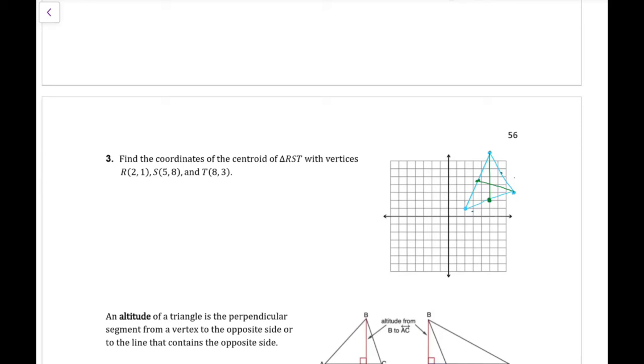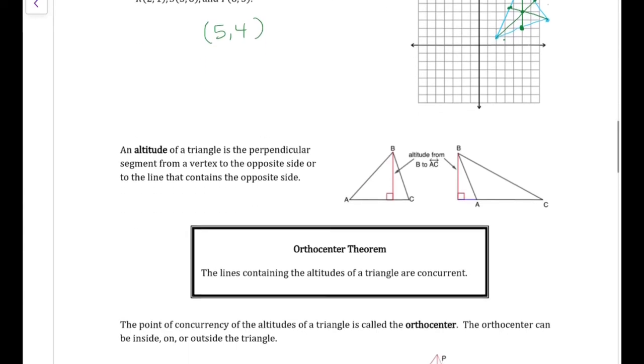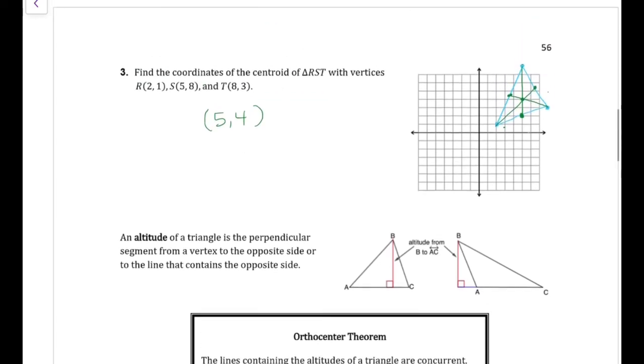Now let's do the last one. We're going to find the midpoint between (5,8) and (8,3). When we do that, we get the point (6.5, 5.5). And we don't really need that third one because they're all going to intersect at the same point. If we count that point up, we get the point (5,4) for the centroid of our triangle.